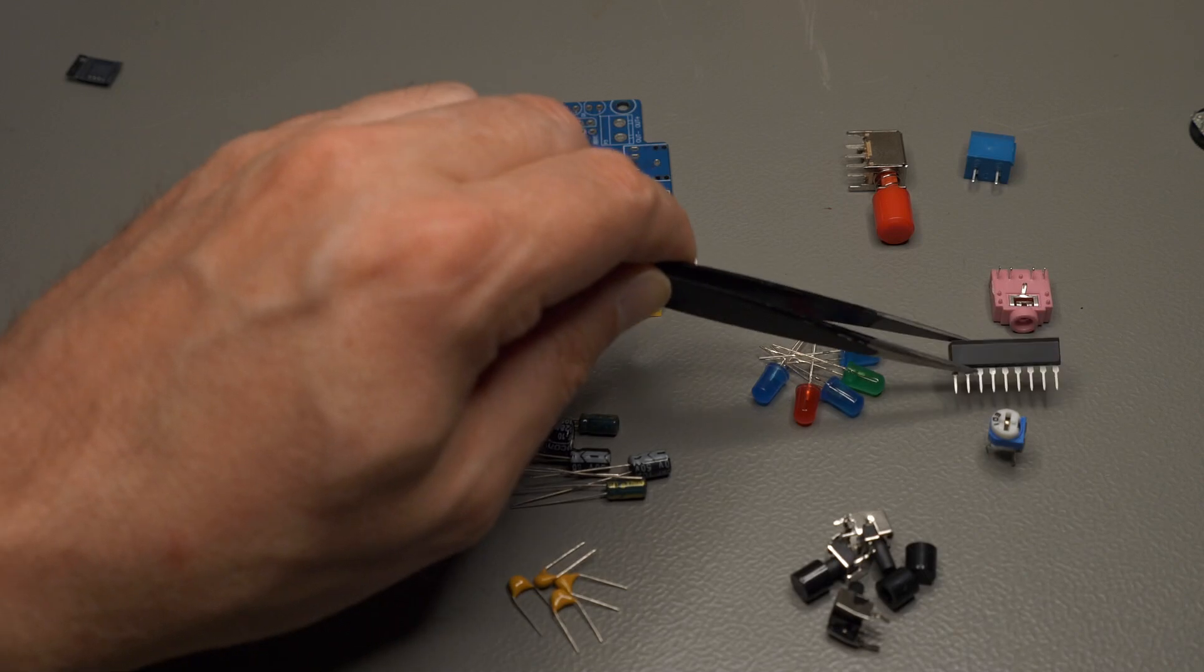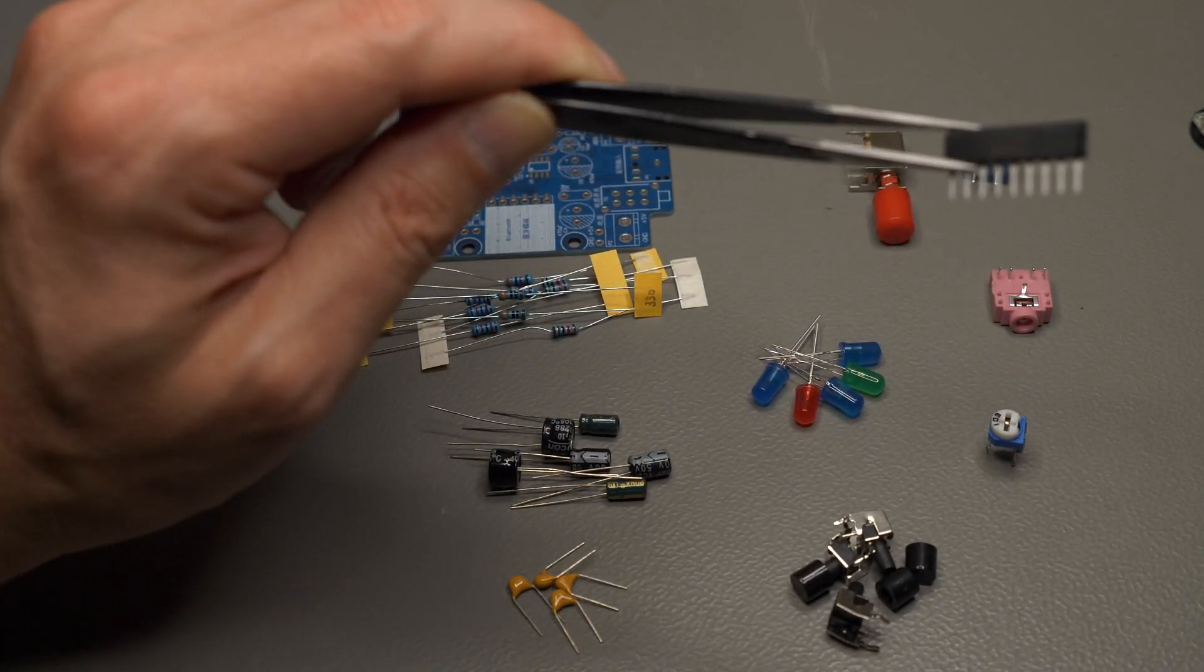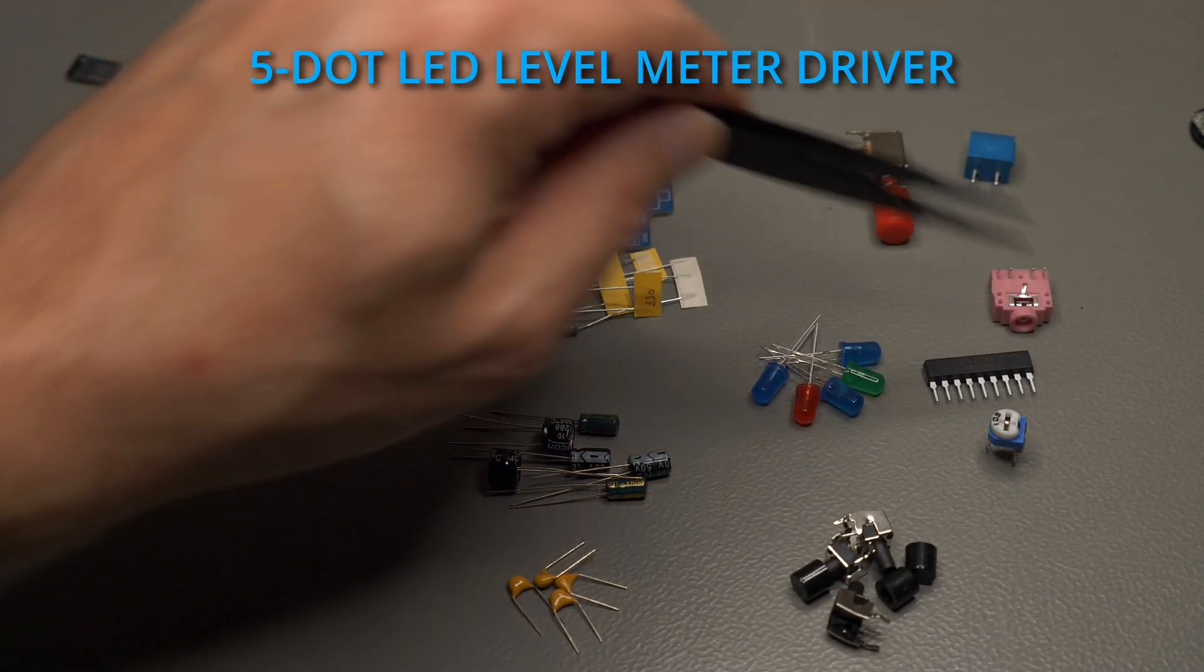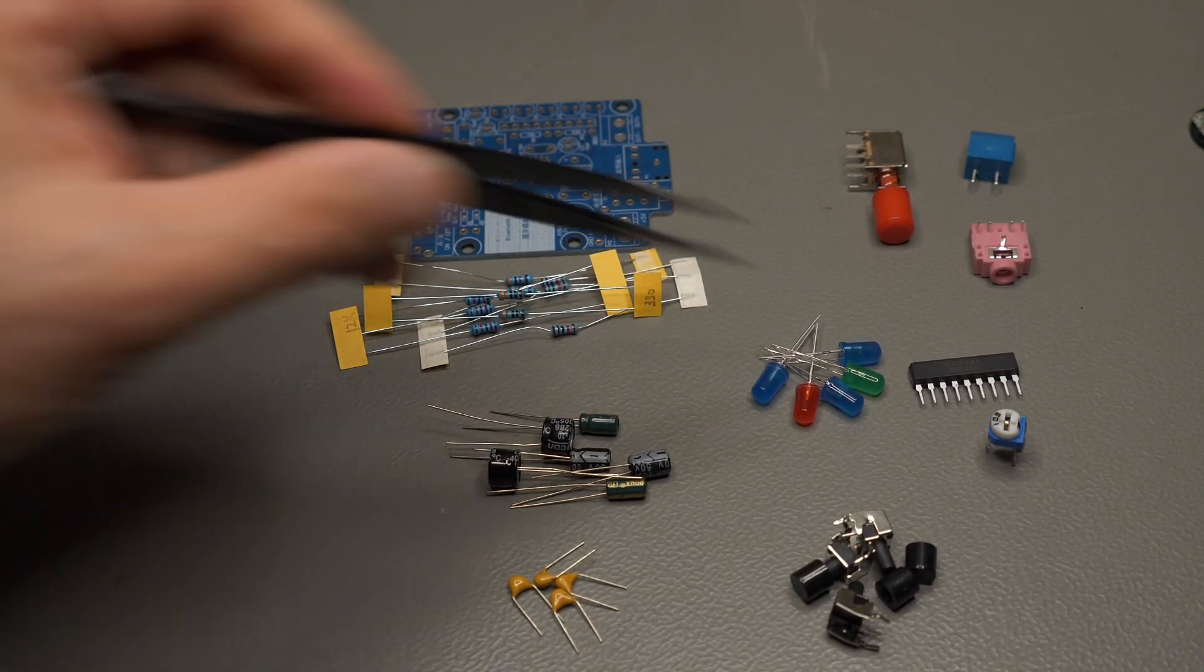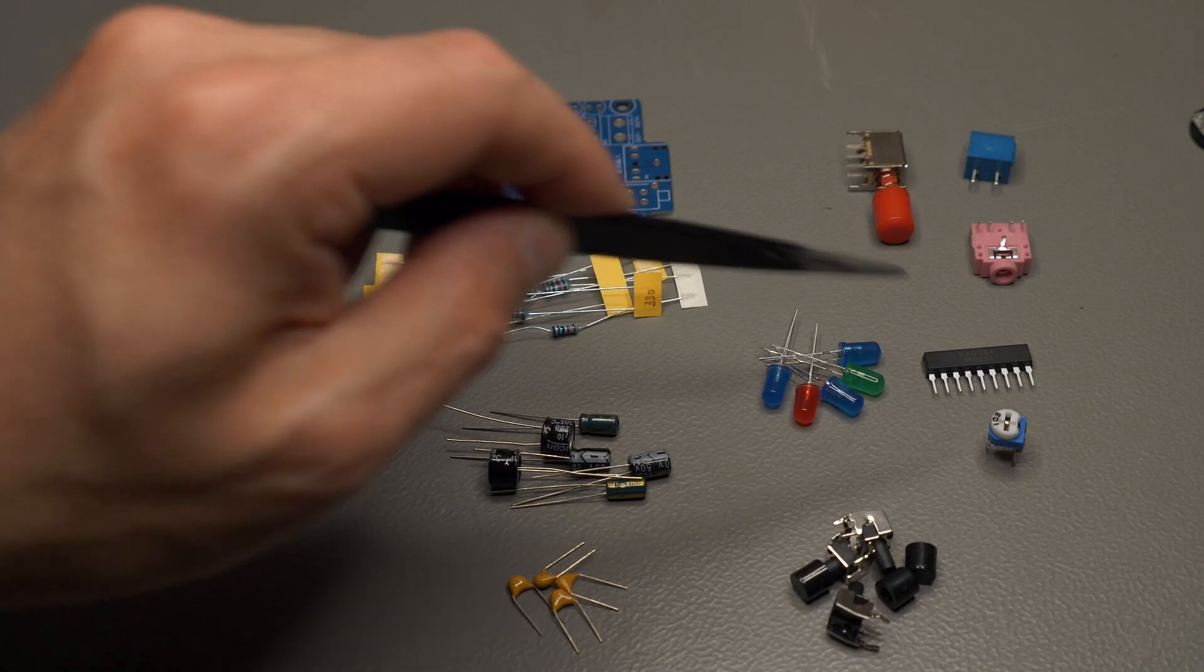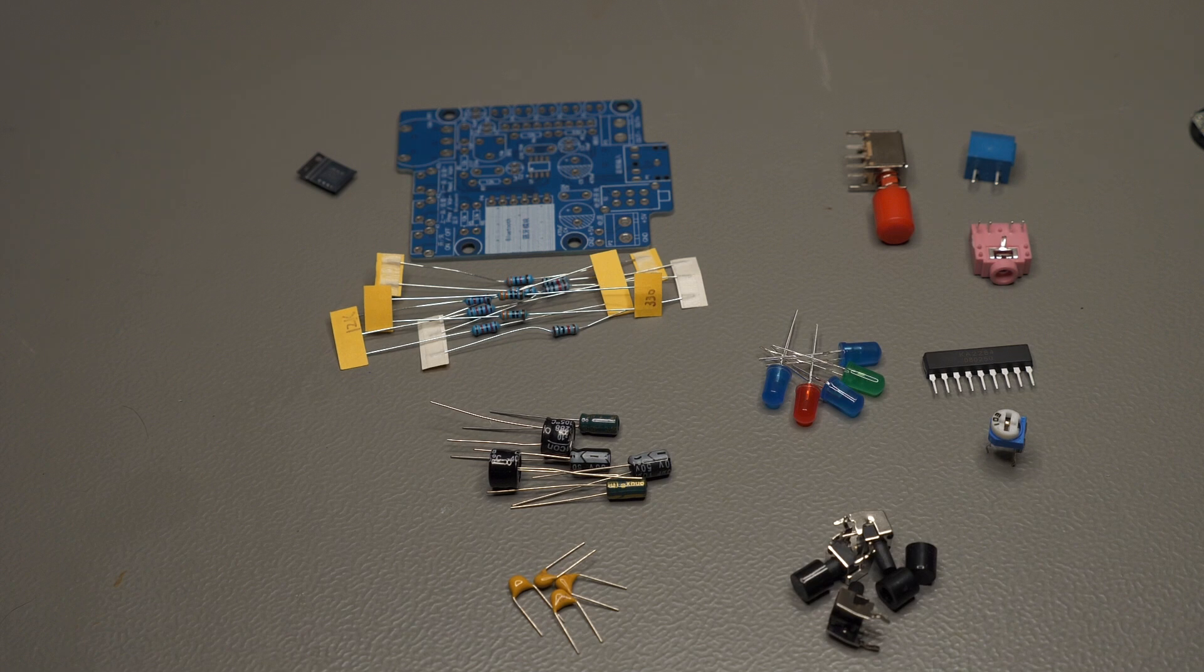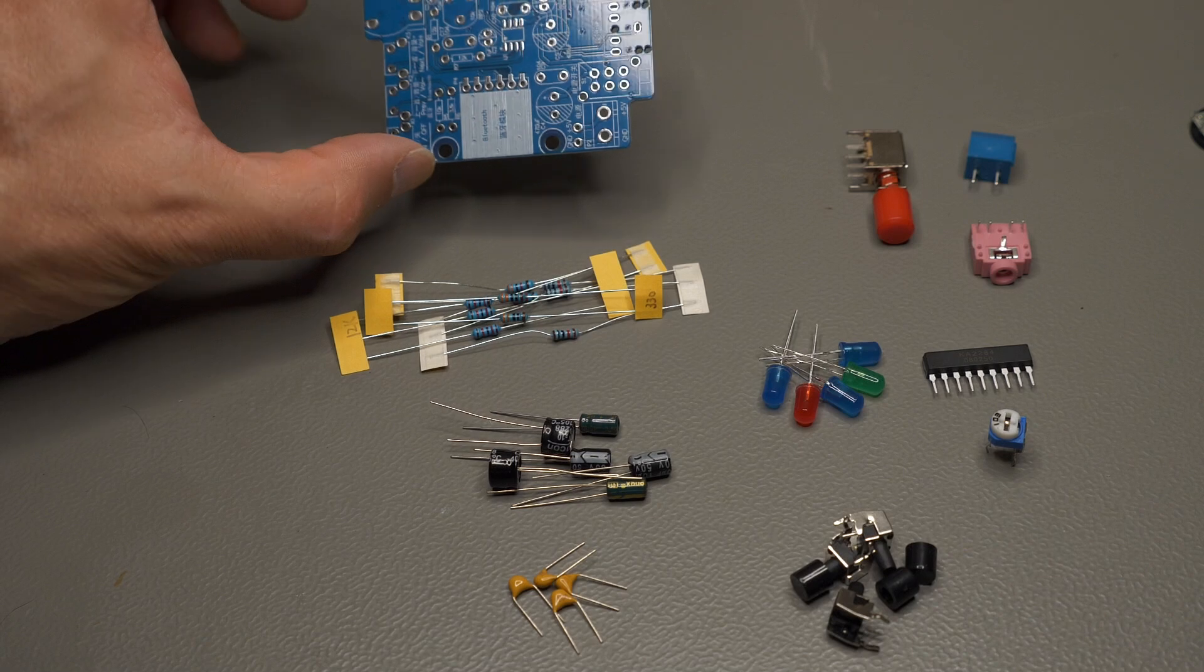And finally, we have the chip that is connected to the LEDs. So it's called Ka2284. Not sure what it is. Maybe some VU meter audio. I don't know. Light show chip. I'll look it up and put it in the description. Okay, so that should be a fun build. Don't see any major problems.